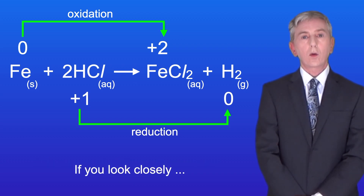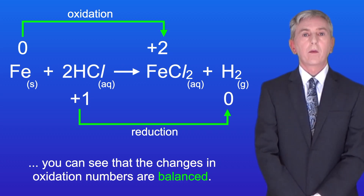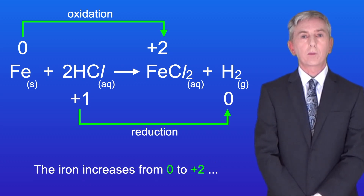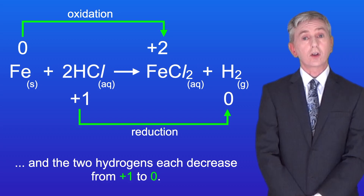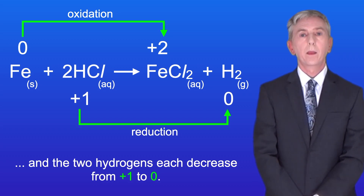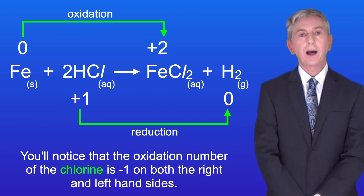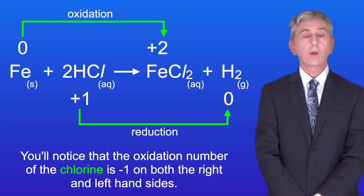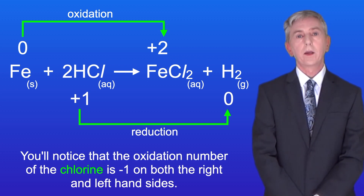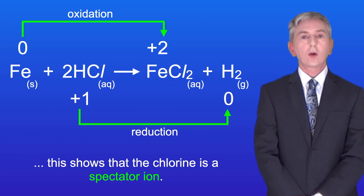If you look closely you can see that the changes in oxidation numbers are balanced. The iron increases from zero to plus two and the two hydrogens each decrease from plus one to zero. The oxidation number of the chlorine is minus one on both the right and left hand sides. Because its oxidation number has not changed, this shows that the chlorine is a spectator ion.